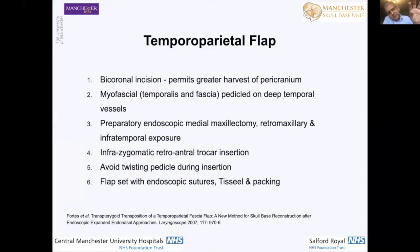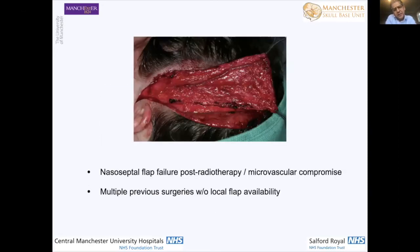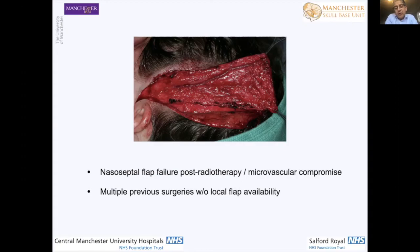The distance from the penetration point to the clival defect recipient site isn't very great. The important point is just to make sure that your pedicle doesn't rotate as you insert the flap. The sort of situation where you'd find this useful is when you've reconstructed with a nasoseptal flap but there's been failure because of radiation and microvascular compromise, or where there have been multiple previous operations and a local flap isn't available. This is a really nice, healthy piece of tissue to use.